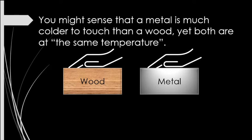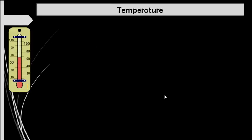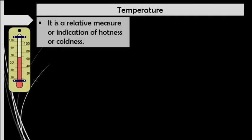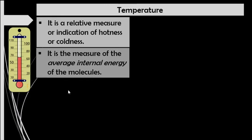If we will base our definition for temperature on this given scenario, we can define temperature as a relative measure or indication of hotness or coldness. But using our bare hands, we will give a biased description on the temperature of an object — one person might say that it is cold, but for another, he might say that it is hot. For giving an accurate description on the temperature, we have to measure the average internal energy of the molecules of an object, and this is done by using a device called thermometer.